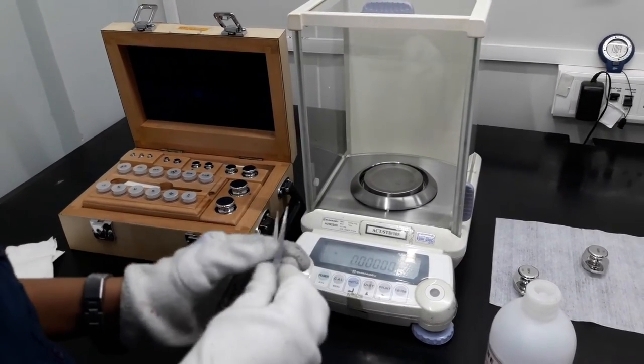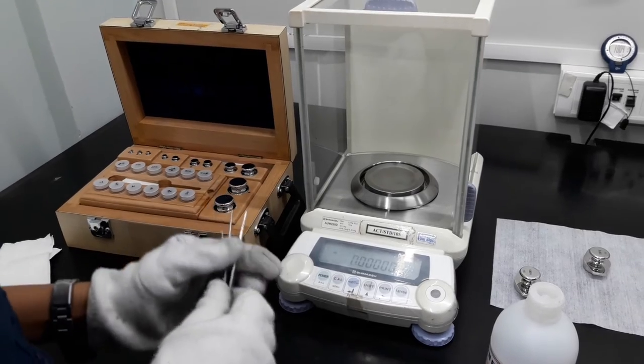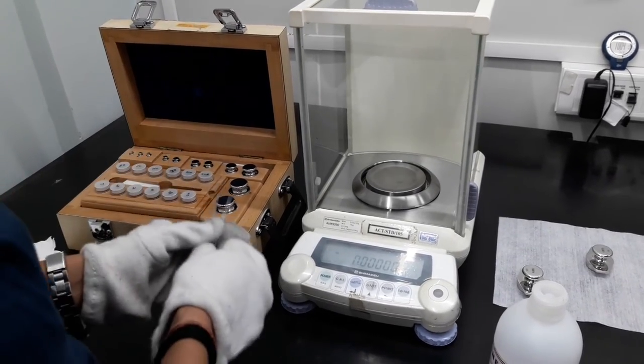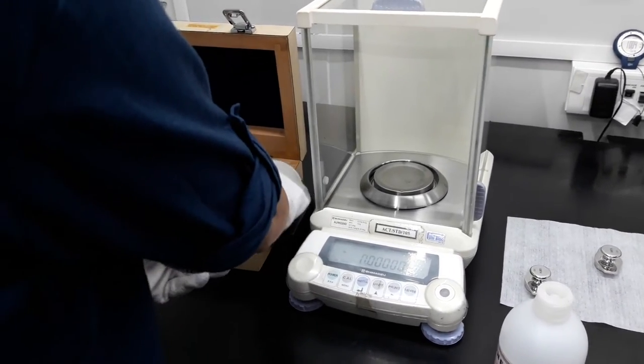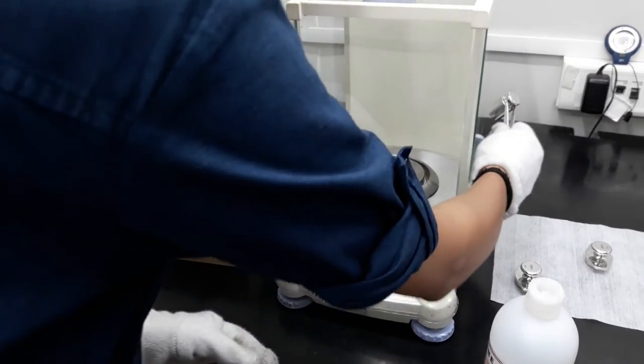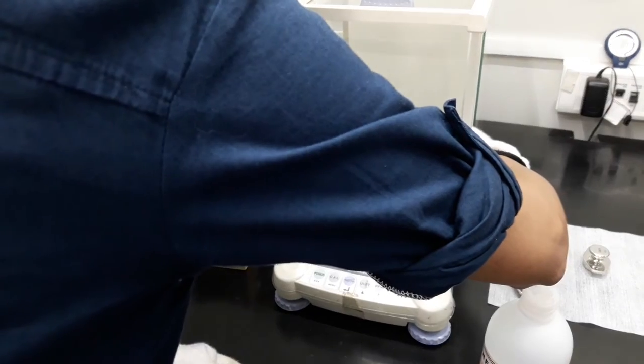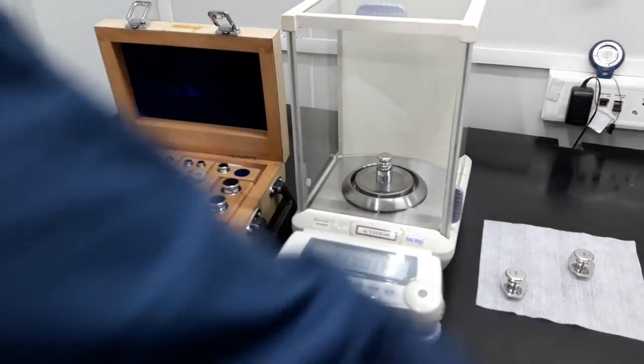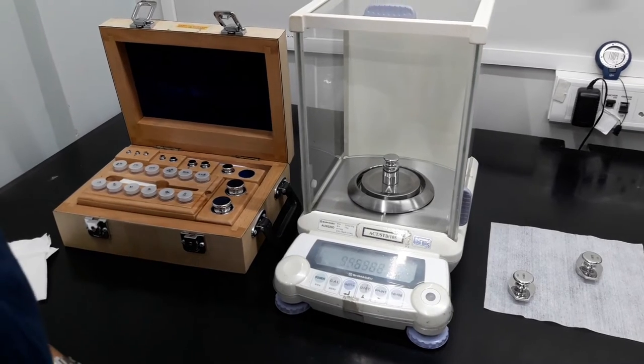First of all, as per ABBA method, take the reference weight and keep it on the pan of the weighing balance. Observe the reading and note it on CDS.